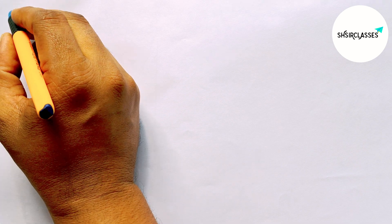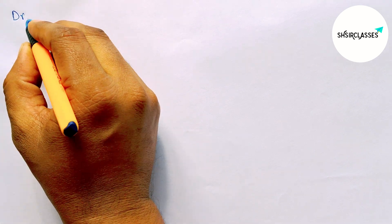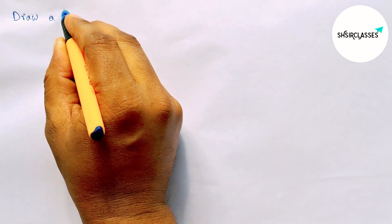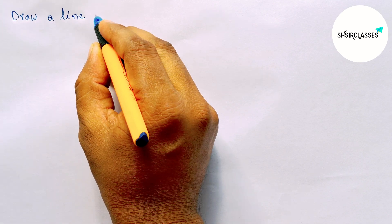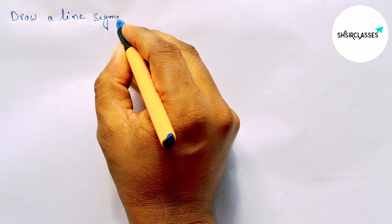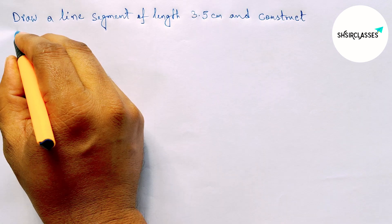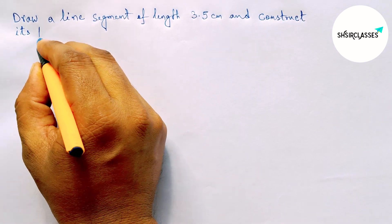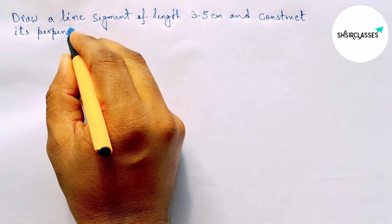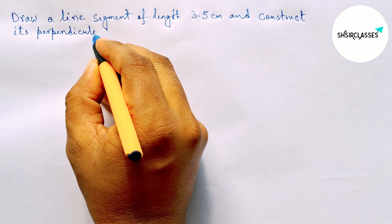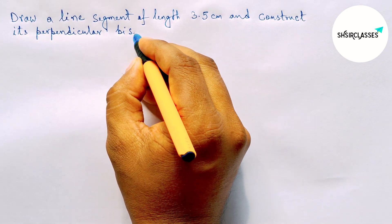Hi everyone, welcome to Sheer Classes. Today in this video, we'll draw a line segment of length 3.5 centimeters and construct its perpendicular bisector in an easy way. Please watch the video till the end.